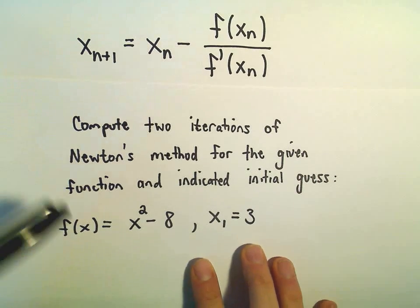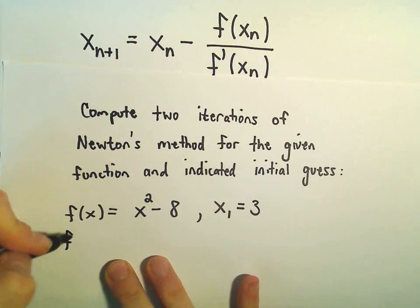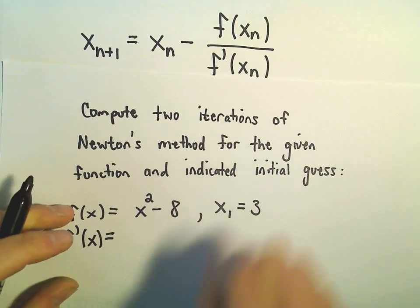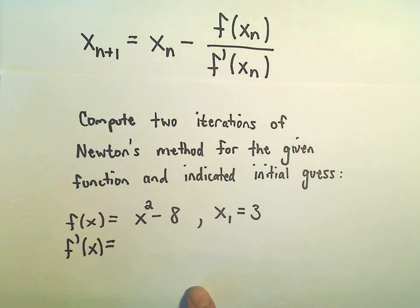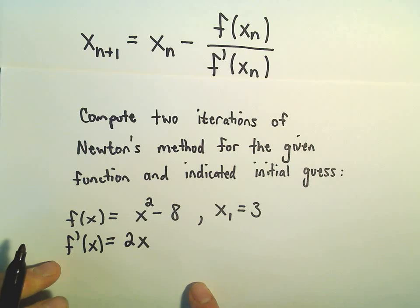So we've kind of got our generic formula up here. It says one thing we're going to have to do is we're also going to have to compute the derivative, because that gets used in the denominator. So f prime of x would just be 2x in this case, so that's not too bad.